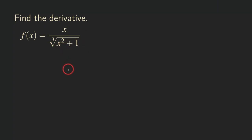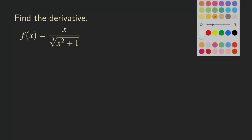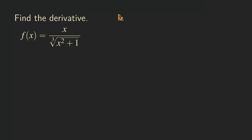So let's get started on this function. We are going to take the derivative by starting with the quotient rule, and then we actually need to use the chain rule on the way whenever it requires us to use it. So first, we need to review the quotient rule.